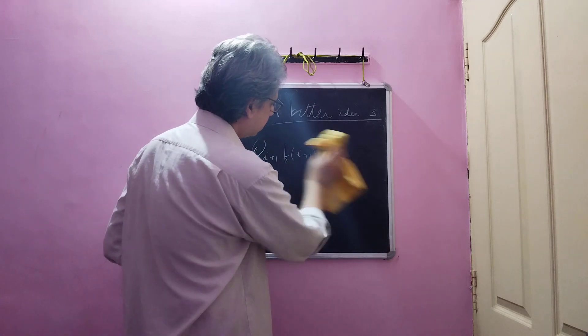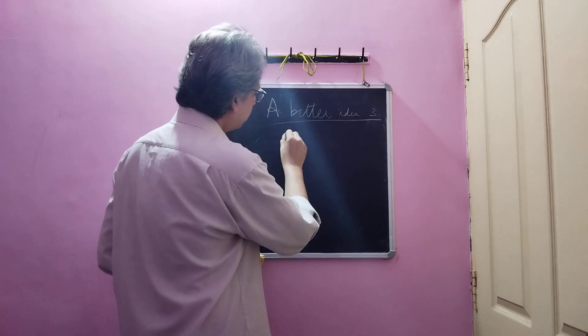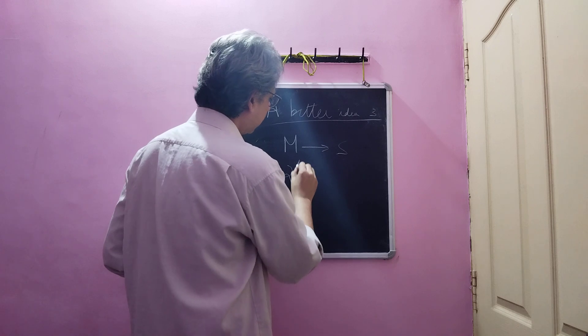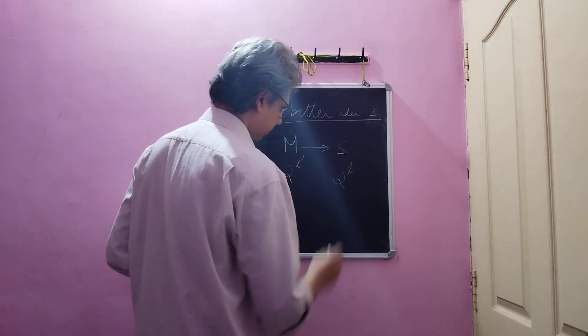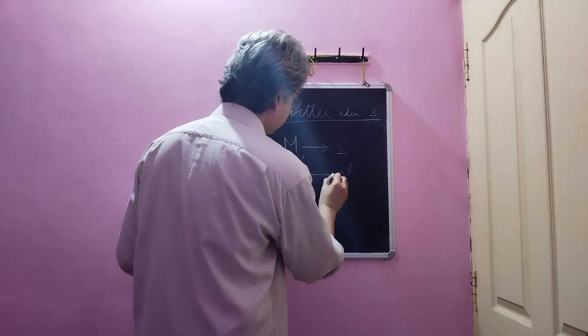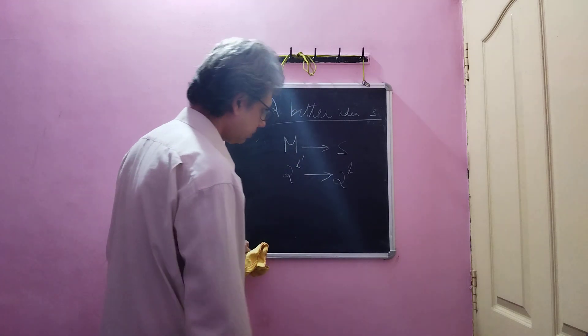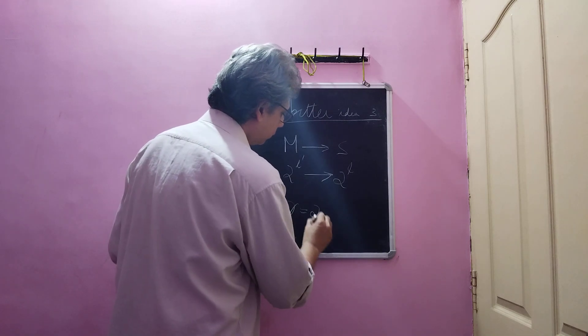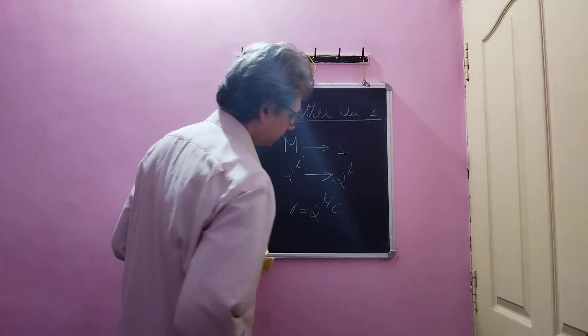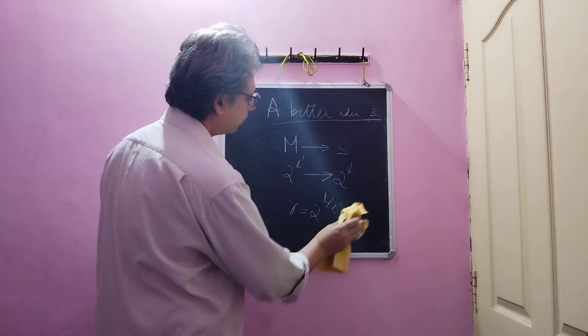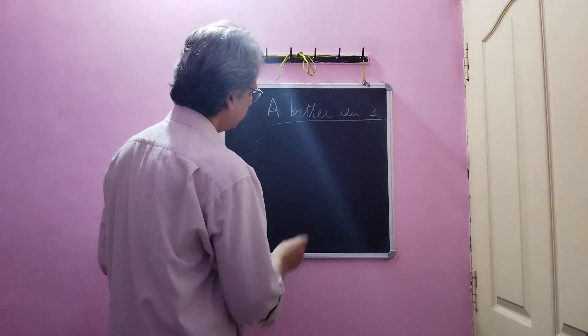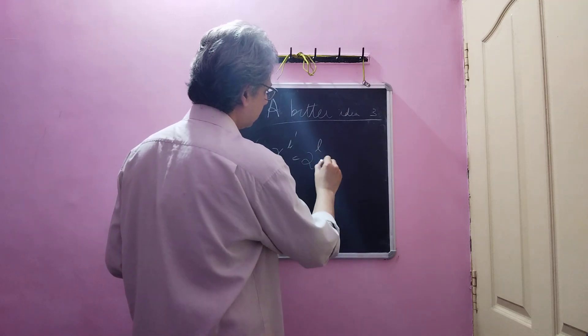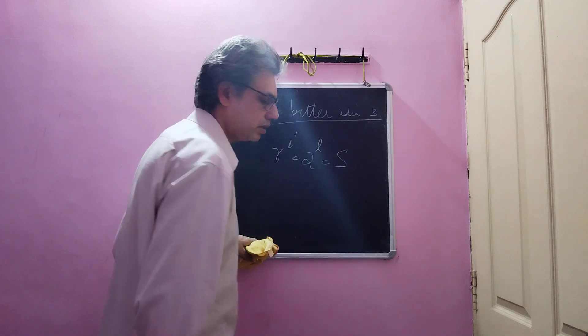Now, if we wish to code or hash a number from m to s, where m is 2 power l dash and s is 2 power l, then we have r is equal to 2 power l by l dash. So r power l dash will be equal to 2 power l equal to s will be true.